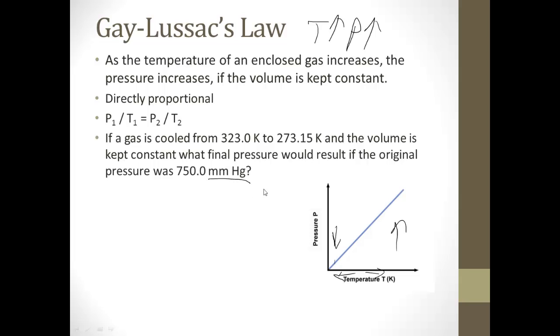If a gas is cooled from 323 Kelvins to 273.15 Kelvins, and the volume is kept constant, what final pressure would result if the original pressure was 750 millimeters of mercury? And this is just another type of unit for pressure. So here's our formula: P1 over T1 equals P2 over T2.